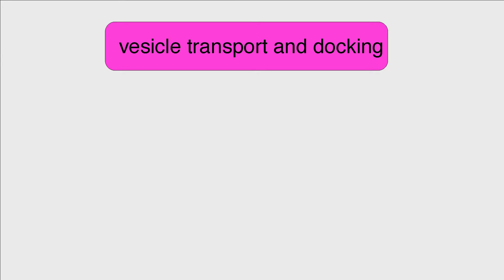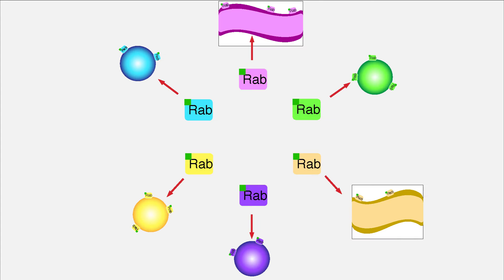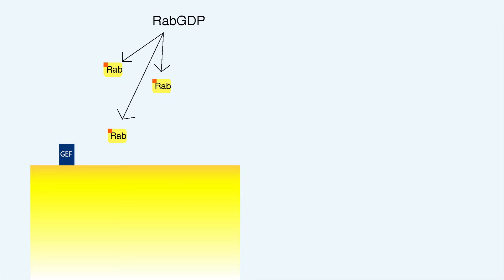First, let's take a look at vesicle transport and docking. These processes are mediated by a family of proteins called RAB-GTPases. There are many different RAB proteins, each associated with a specific vesicle or target membrane, to ensure vesicles are brought to the correct location.